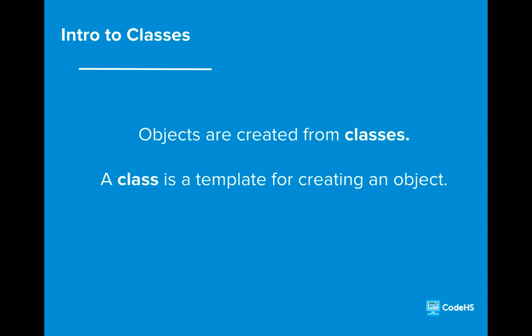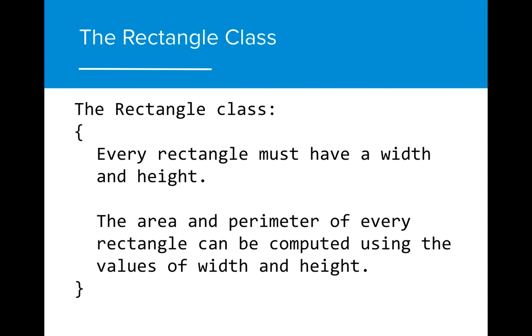In order to create a rectangle object in the first place, we must create a rectangle class. A class is a template that holds information about what a class object's state and behavior can be, and how they can be used in programs. To create a rectangle object, we first need to create a rectangle class.